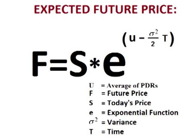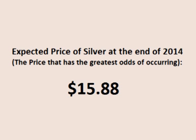To calculate out the expected future price of silver, I took the current price of $16.43 and multiplied it by e raised to the power of the average of the periodic daily returns minus half of the variance, times the number of trading days. If we assume 29 trading days for silver left in this year, this makes the expected price of silver to be $15.88 at the end of the year.